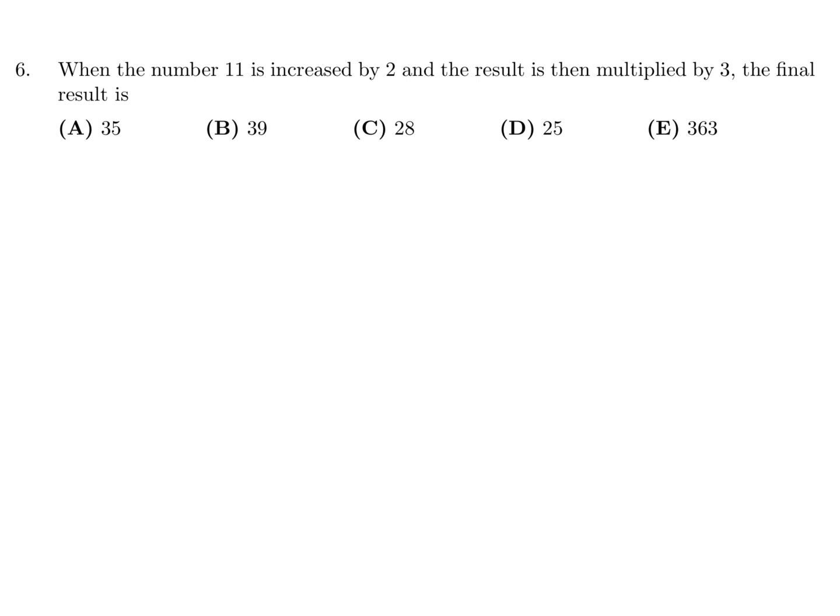When the number 11 is increased by 2, and the result is then multiplied by 3, the final result is. So that would be 3 times 13, and therefore that's 39. 39 is the answer for number 6. That would be B.